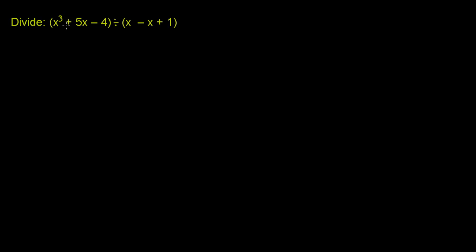We need to divide x to the third plus 5x minus 4 by x minus x. Actually, I think this is supposed to be an x squared. Let me correct it. So we're going to divide x to the third plus 5x minus 4 by x squared minus x plus 1.